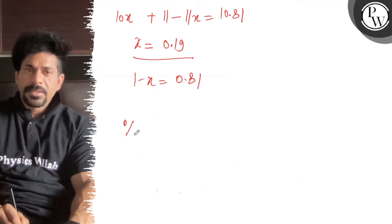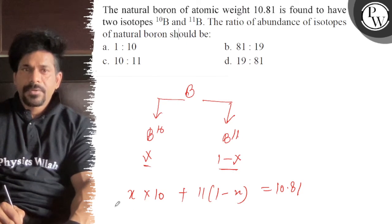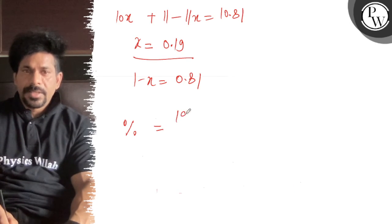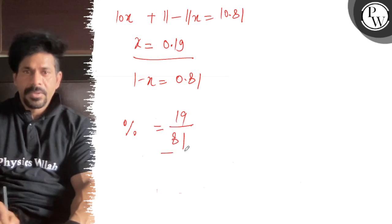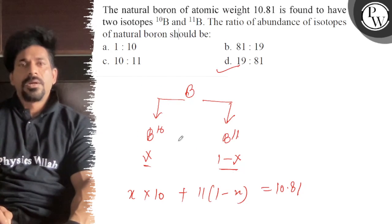So the percentage ratio of boron-10 to boron-11 is 19 upon 81, and that is the right answer. If you see the options, that is 19 to 81. All the best.